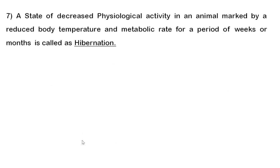Seventh question: a state of decreased physiological activity in an animal marked by reduced body temperature and reduced metabolic rate for a period of weeks or months is called hibernation. If they ask about a daily basis, it is torpor. Know the differences between torpor, hibernation, winter sleep, and estivation.